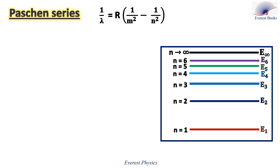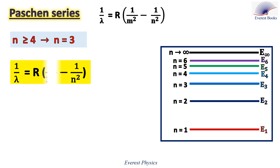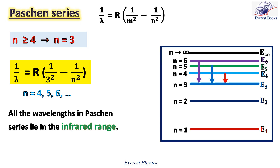Let's move to the Paschen series. The Paschen series is the set of spectral lines discovered in 1908, which correspond to downward transitions from higher energy levels to the N = 3 energy level. We replace M in the Rydberg formula by 3, and N could be 4, 5, 6, etc. Three example transitions are from N = 6 to N = 3, from N = 5 to N = 3, and from N = 4 to N = 3. All the wavelengths in the Paschen series lie in the infrared range.